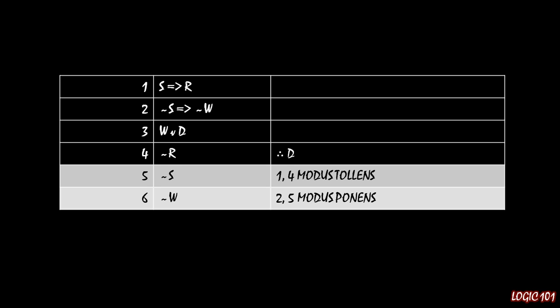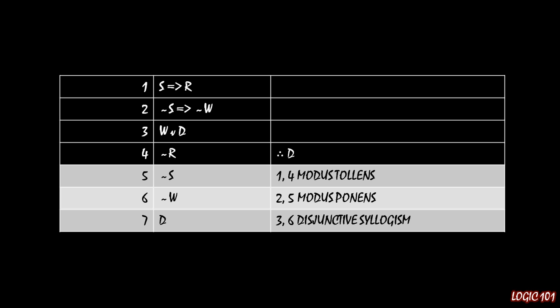Now we have something that interacts with D. If we look at line 3, we have W or D, and on line 6 we just concluded not W. We know that if you have the negation of a part of a disjunction, you can apply disjunctive syllogism to get the other thing as being true. So we take lines 3 and 6 and apply disjunctive syllogism — we get D. And lo and behold, we are done with the proof. We wanted to ultimately conclude that D is true, and using the rules of replacement and rules of inference, we have done exactly that.